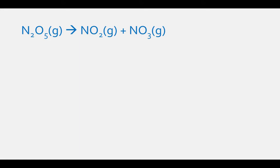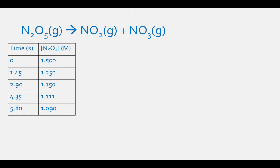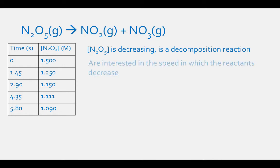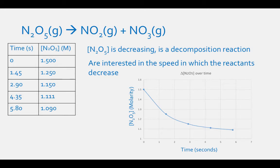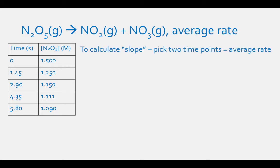Another example of reaction rates is dinitrogen pentoxide, N2O5, decomposing to give nitrogen dioxide and nitrogen trioxide: N2O5 gas results in NO2 gas plus NO3 gas. Suppose we monitor the concentration of reactant versus time and we get this data. We can see from this data that the concentration of the reactant is decreasing over time, which makes sense because this is a decomposition reaction. We are interested in the speed at which the reactants disappear from this chemical reaction. If we graph this data by putting concentration on the vertical axis and time on the horizontal axis, we end up with a plot that looks like this.